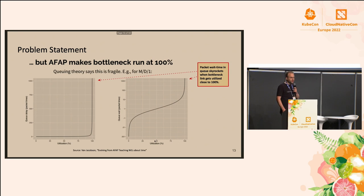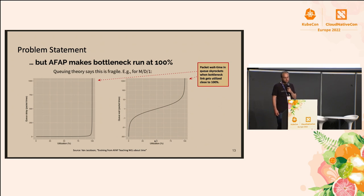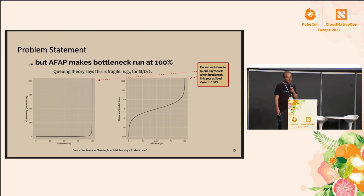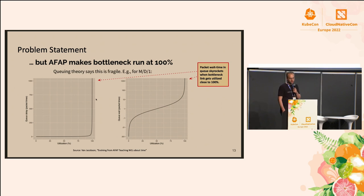The nature of TCP is to send as fast as possible, and queuing theory shows that once you consume the bottleneck link close to 100%, the wait time of packets in the queue basically skyrockets to infinity.